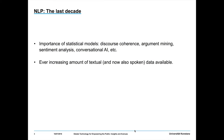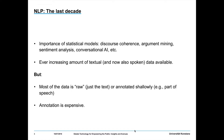What we're seeing in NLP is a focus on statistical models across various areas of discourse processing — discourse coherence, argument mining, sentiment analysis and conversational AI among many others. We also see an ever-increasing amount of textual and now spoken data available. But most of the data used for developing these statistical models is raw — just text or annotated very shallowly, such as parts of speech — and that's because annotation is expensive.